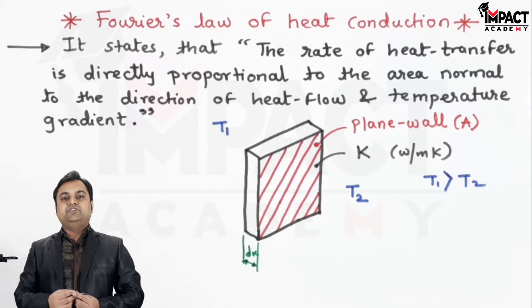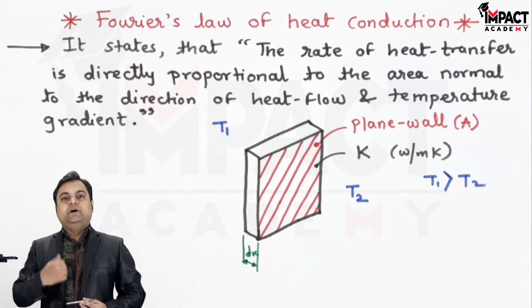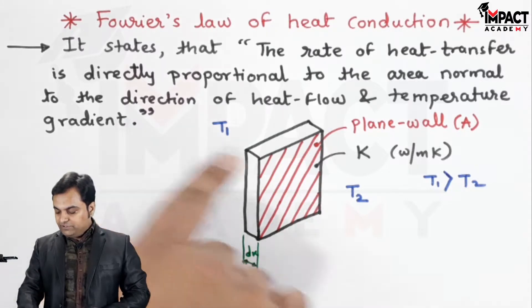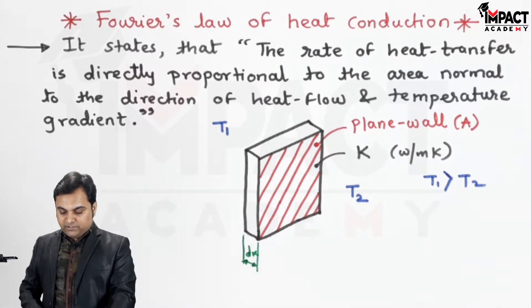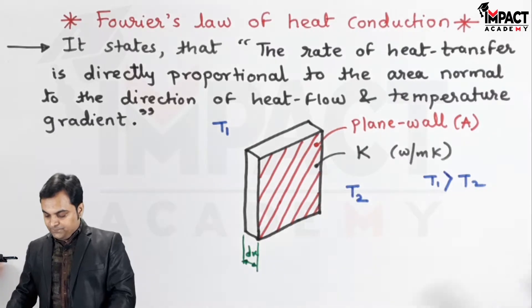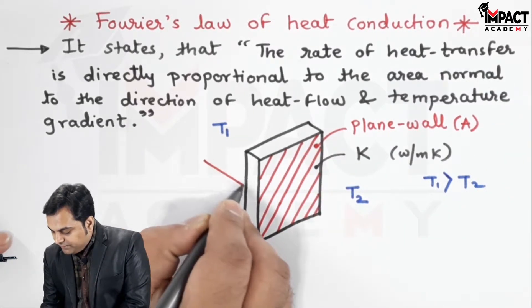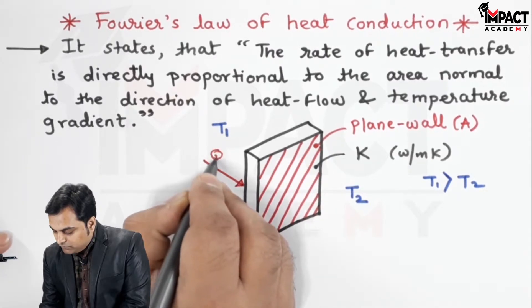So the heat flow direction would be from T1 to T2. As per the law of Fourier's, this heat transfer would be perpendicular, that is normal to the area of flow.